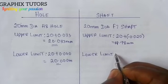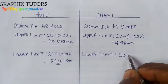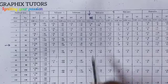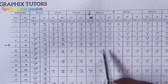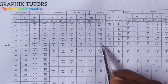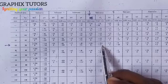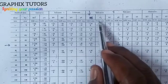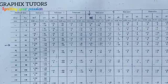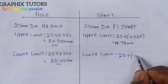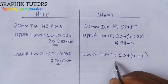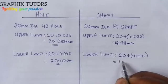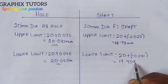For the lower limit of the shaft, we use the lower deviation of minus 41. Multiplying minus 41 by 0.001 gives minus 0.041. So, 20 minus 0.041 gives us 19.959mm. That is the lower limit of the shaft. We have now successfully found the upper and lower limits of both the hole and the shaft.